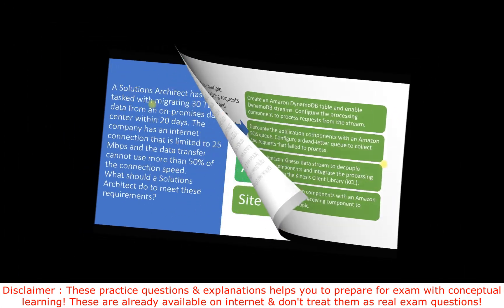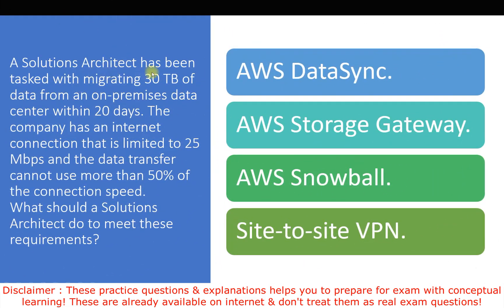The second question: a solutions architect has been tasked with migrating 30 TB of data from an on-premises data center within 20 days. The company has an internet connection limited to 25 Mbps, and the data transfer cannot use more than 50% of the connection speed. What should the solutions architect do? The options are: AWS DataSync, AWS Storage Gateway, AWS Snowball, and Site-to-Site VPN.